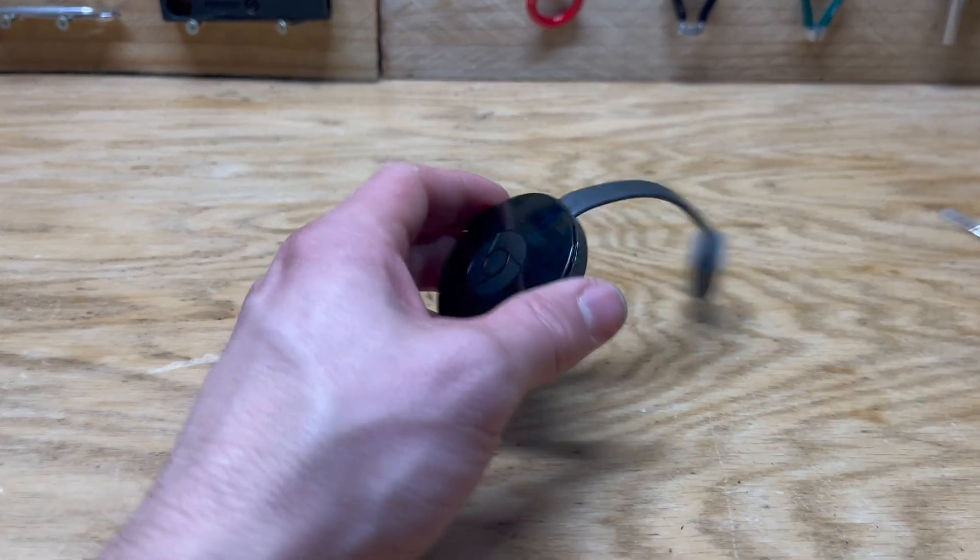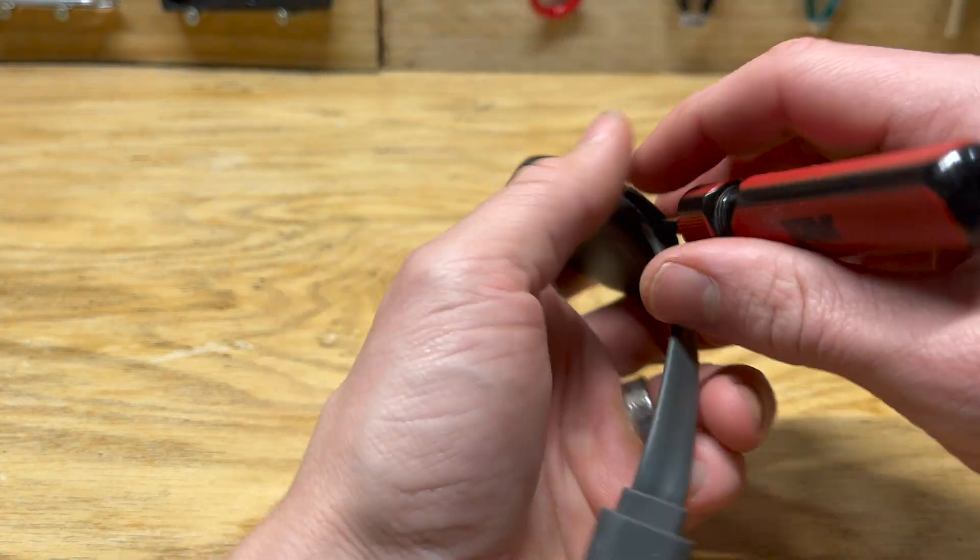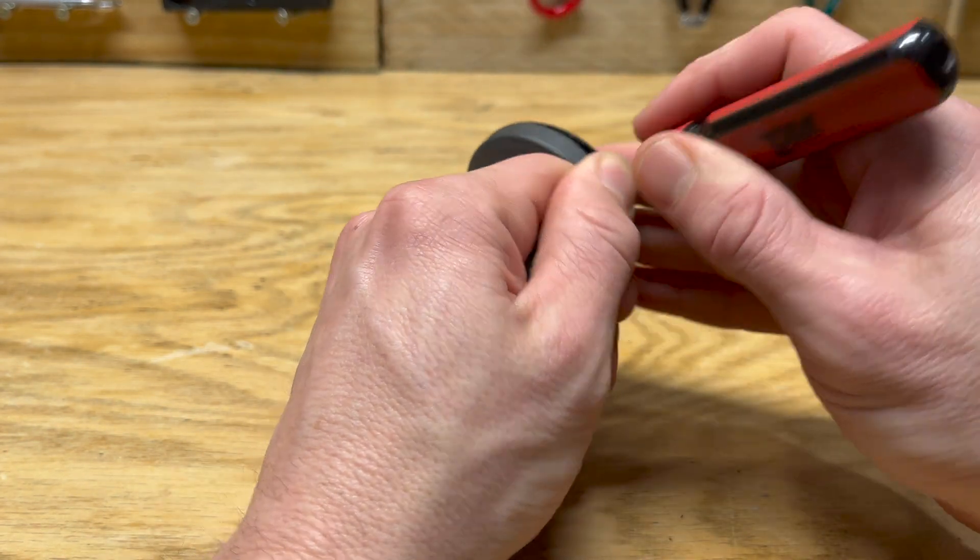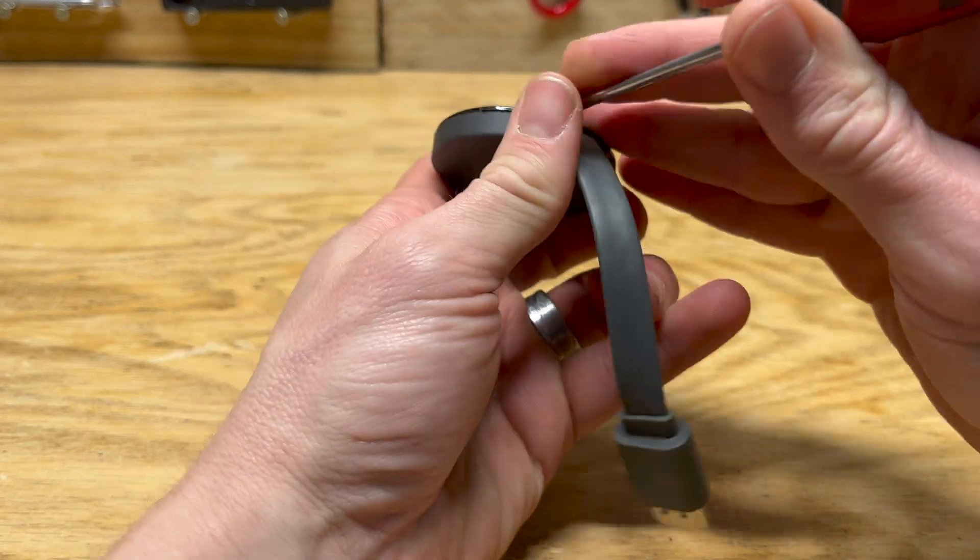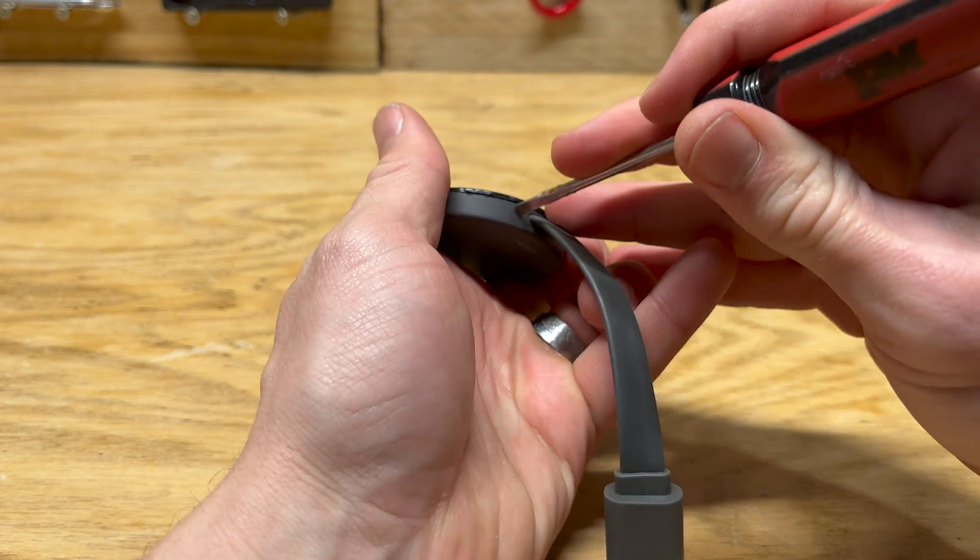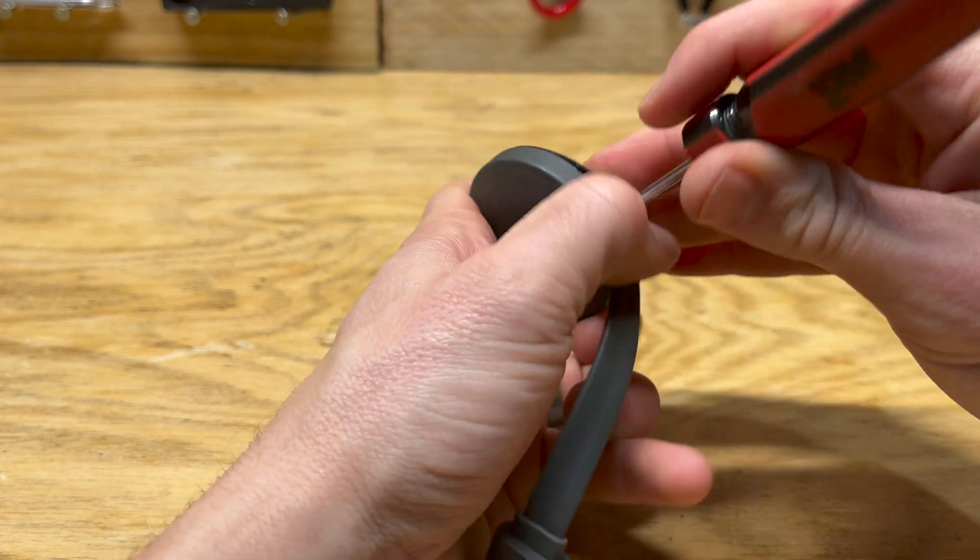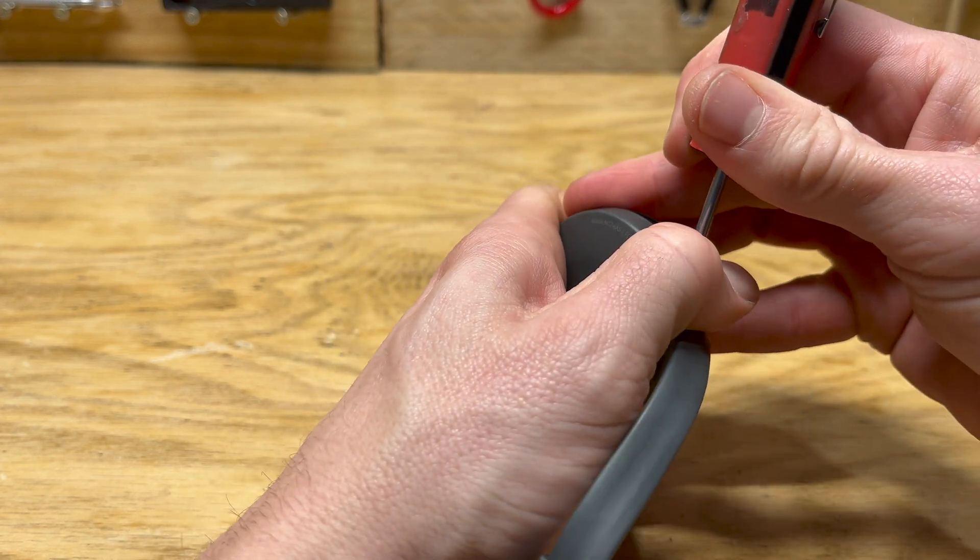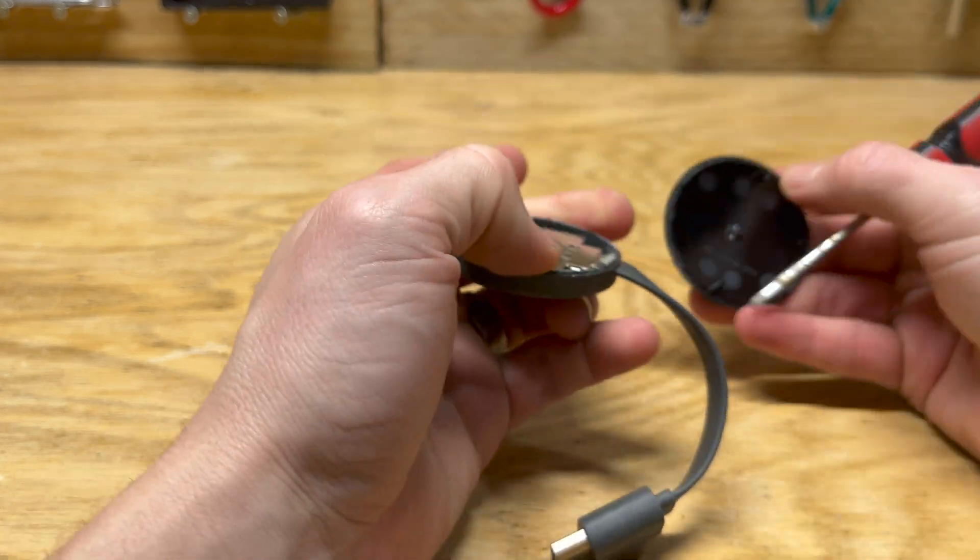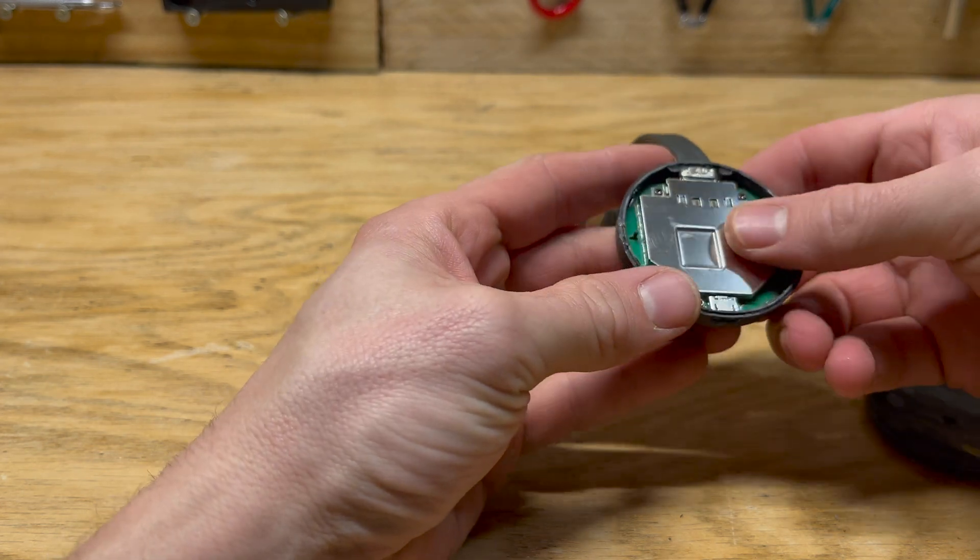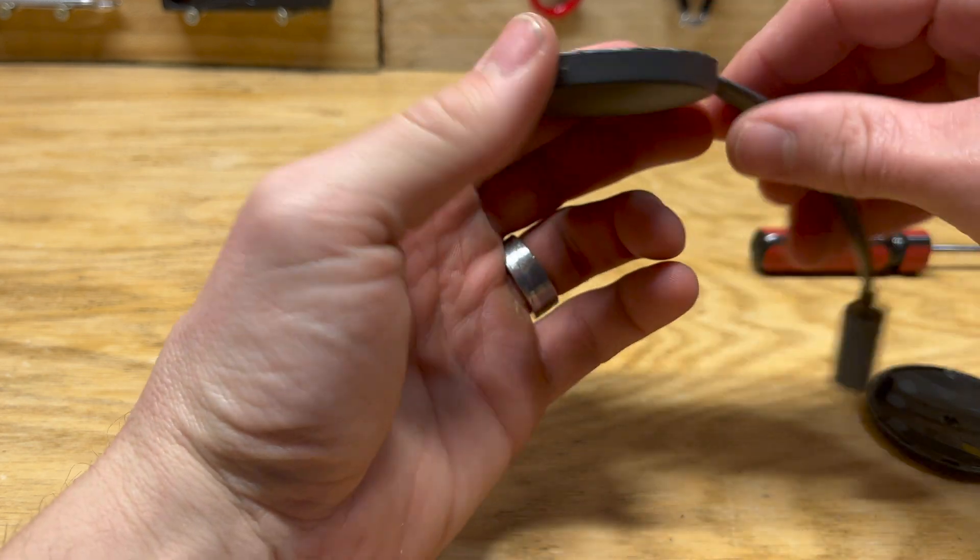After poking around, I figured out the best place to start with your screwdriver is right where the cord goes in. Then you can slowly peel it back—it's just held on with either glue or some clips. There it goes, so I got the top off. This is the inside.